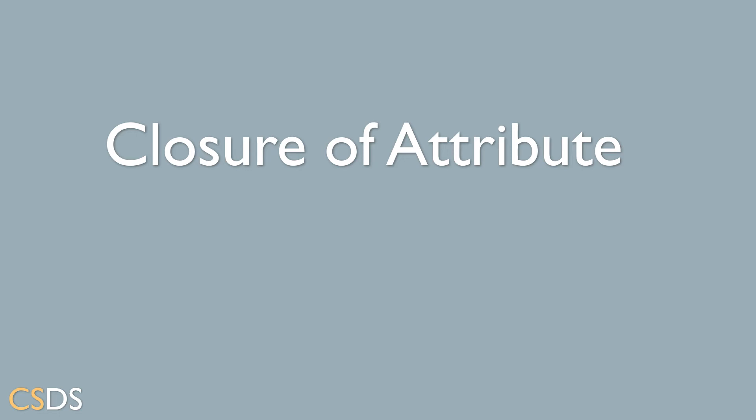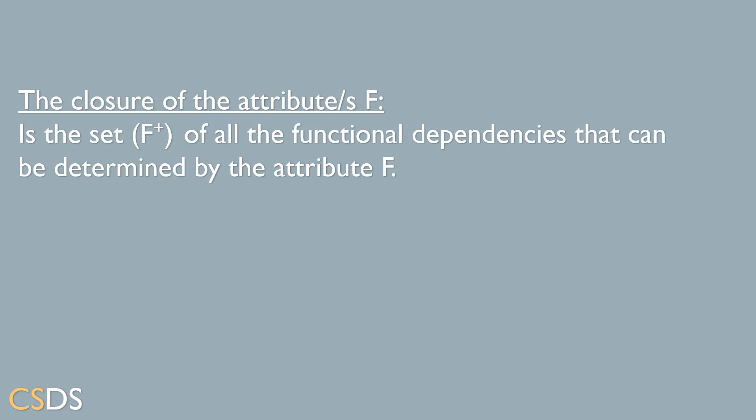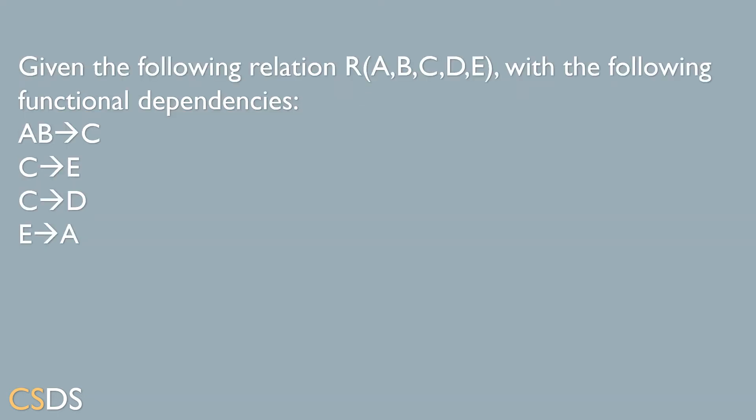In this video, we're going to learn about the closure of an attribute. The closure of an attribute are all the attributes that can be determined from that same attribute using the given dependencies of the relation. Let's make this more clear by seeing some examples.